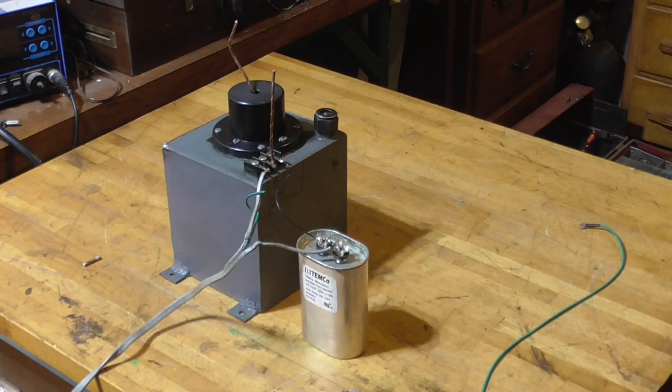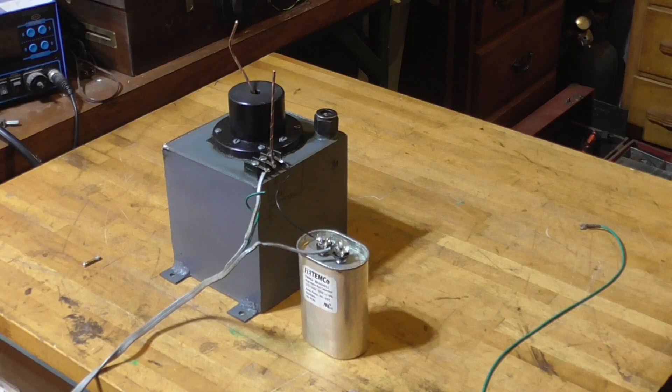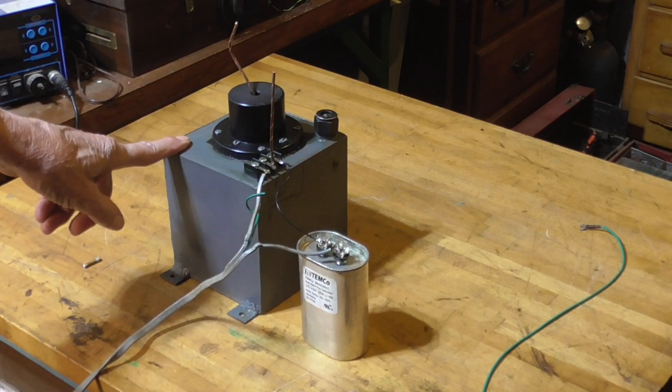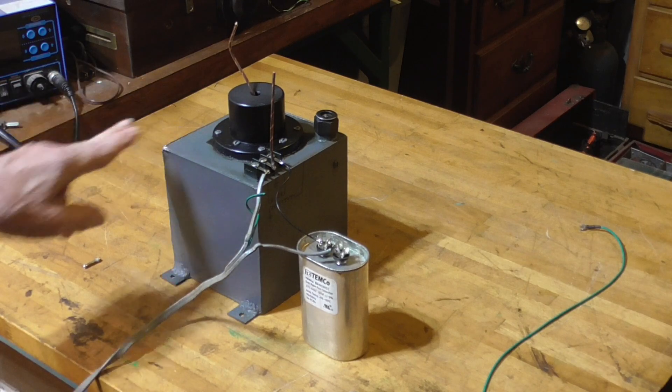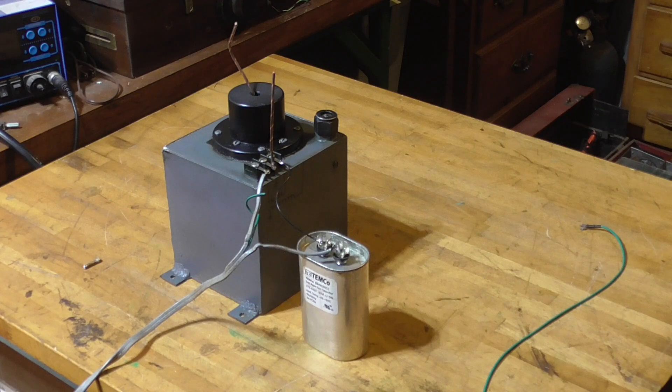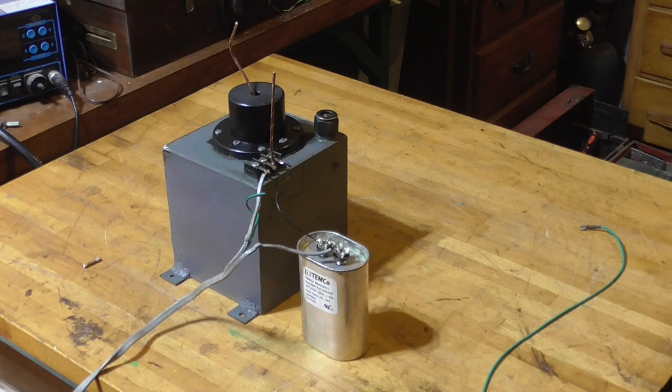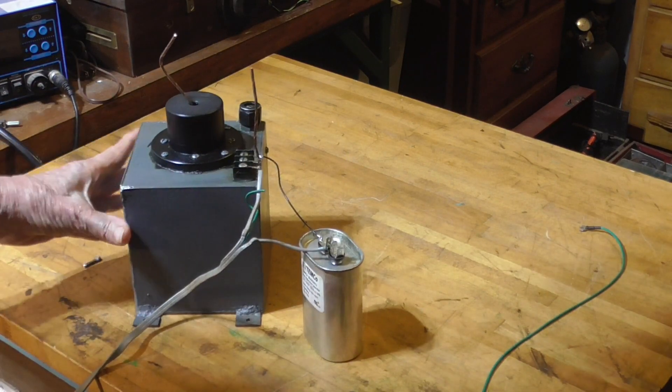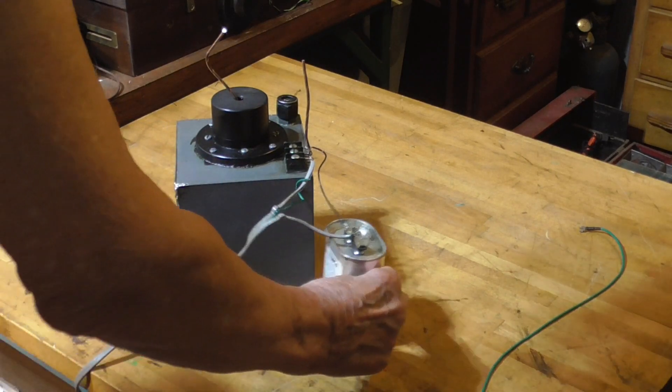Alright, here's a transformer set up. We've got a transformer out of an x-ray machine. Puts out 60,000 volts and I'm trying to show what a real 60,000 volts really looks like. We've got people on there claiming all these high voltages and stuff.